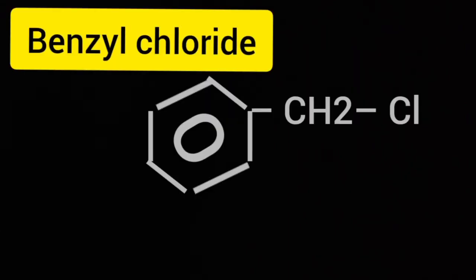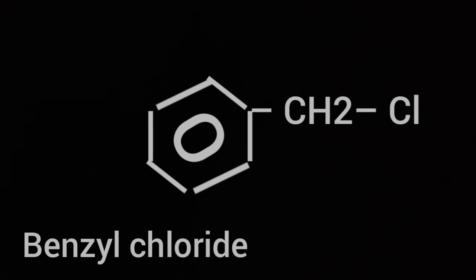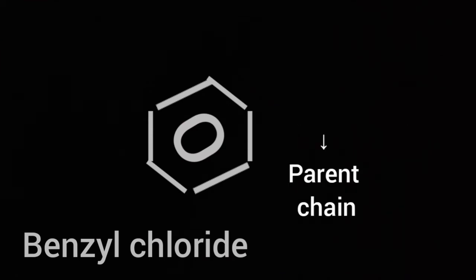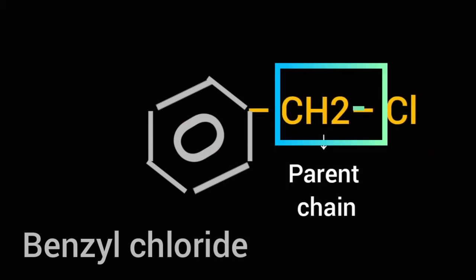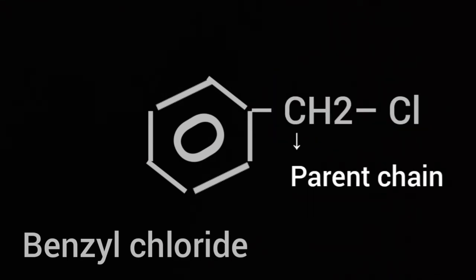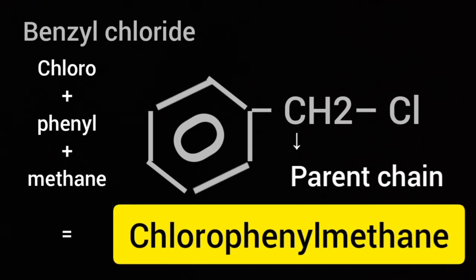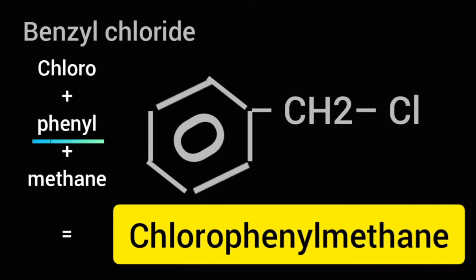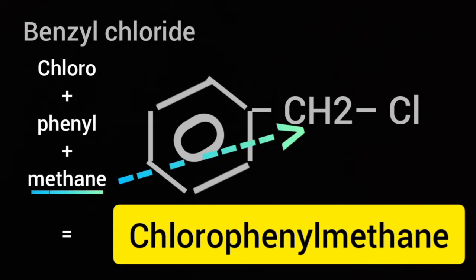Let us write the IUPAC name of the first compound: benzyl chloride. Here, chlorine is connected to the side chain, so the side chain is the parent chain. The IUPAC name is chloro phenyl methane — the benzene ring is stated as the substituent and written as phenyl, while the chlorine-containing carbon is stated as the parent chain, so it is methane.